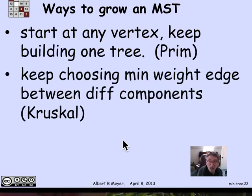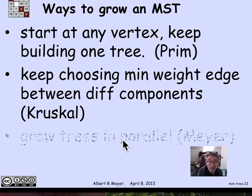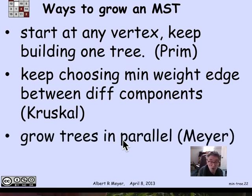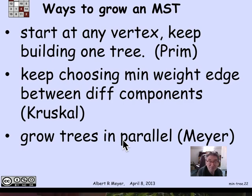Another approach is Kruskal's algorithm: globally find the minimum weight edge among all connected components, then color one endpoint's component black and the other white — this conforms to our procedure for picking a minimum weight edge between differently colored components. Finally, you can grow trees in parallel by choosing the minimum weight edge around each connected component simultaneously. If the choices don't conflict, you can grow these trees in parallel — I call that jokingly Myers' procedure.